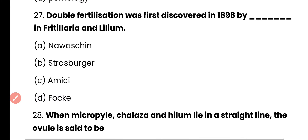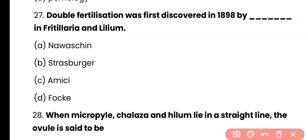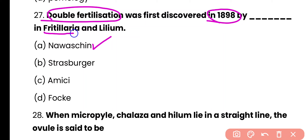Question 27. Double fertilization was first discovered in 1898 by which scientist in Fritillaria and Lilium? Navashin, Strasburger, Amici, or Focke? The correct answer is option A. Navashin discovered the double fertilization phenomenon in 1898 in Fritillaria and Lilium. Double fertilization is the characteristic feature of angiosperms.